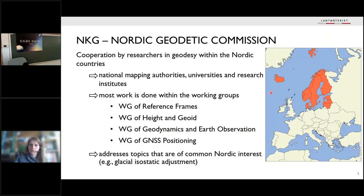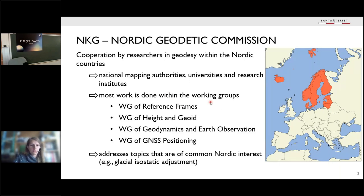Lantmäteriet is also part of NKG, the Nordic Geodetic Commission. NKG involves the countries shown in red: Sweden, Norway, Finland, Denmark, Iceland, and meanwhile also the Baltic states. NKG is a corporation of researchers in geodesy within the Nordic countries, including national mapping authorities like Lantmäteriet but also universities and research institutes. Most work is done within working groups, quite similar to IAG — I would call it a regional IAG. These working groups meet annually, and NKG has a general assembly every four years. Everybody working in the Nordic countries is encouraged to join one of these working groups.